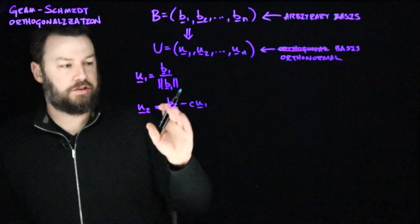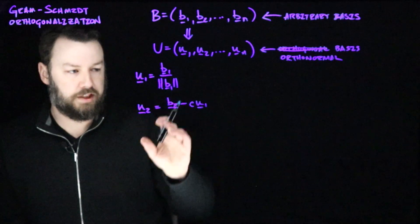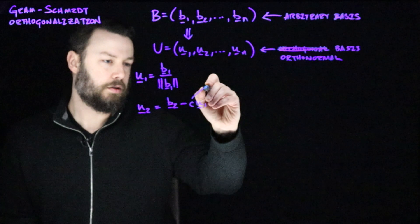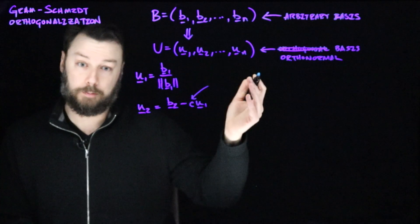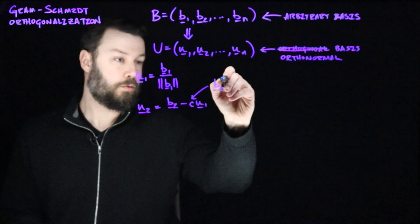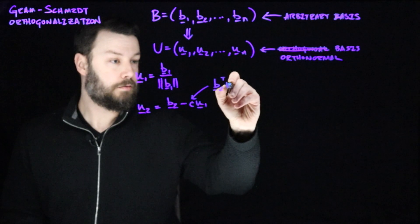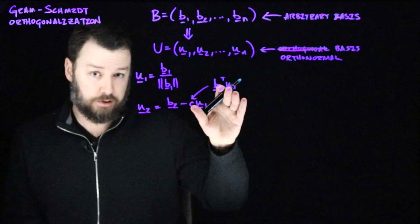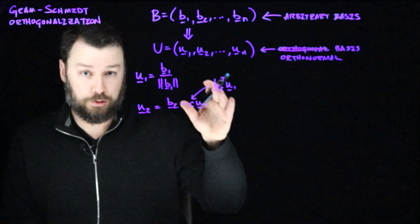Now where do we get c? Well, c needs to be the amount of b2 that appears in u1, right? So what's that going to be? Well, that is going to be the inner product of b2 and u1. So we'll write that like this. So this is the projection of b2 onto u1.